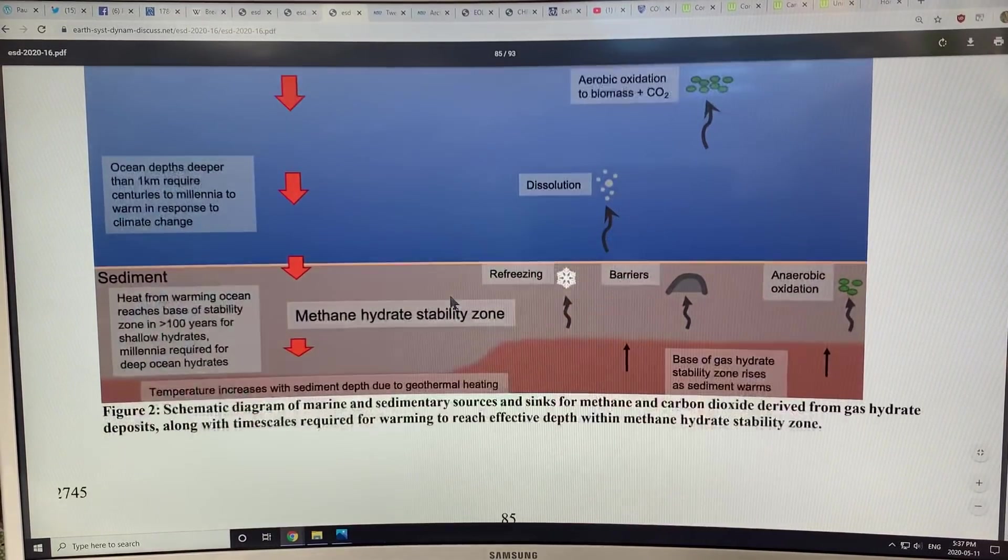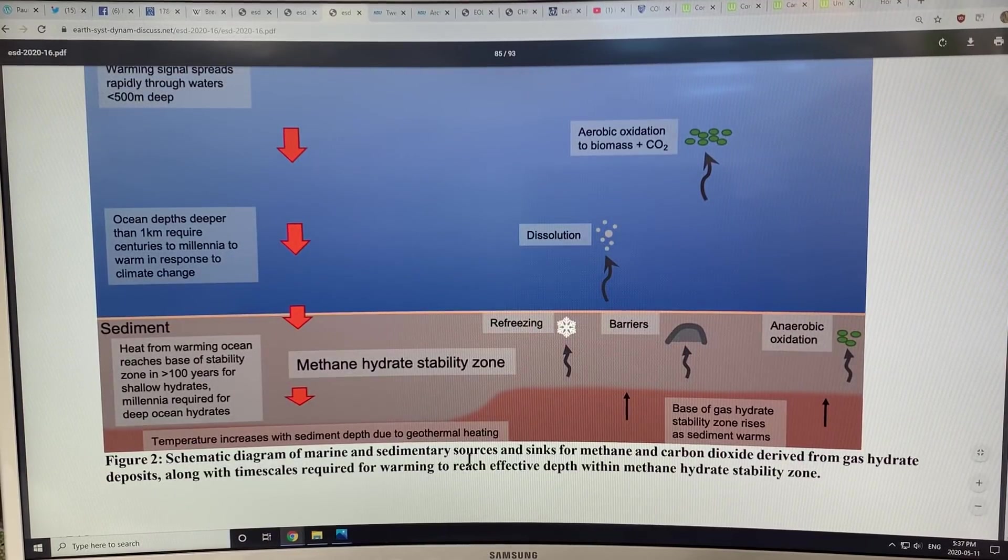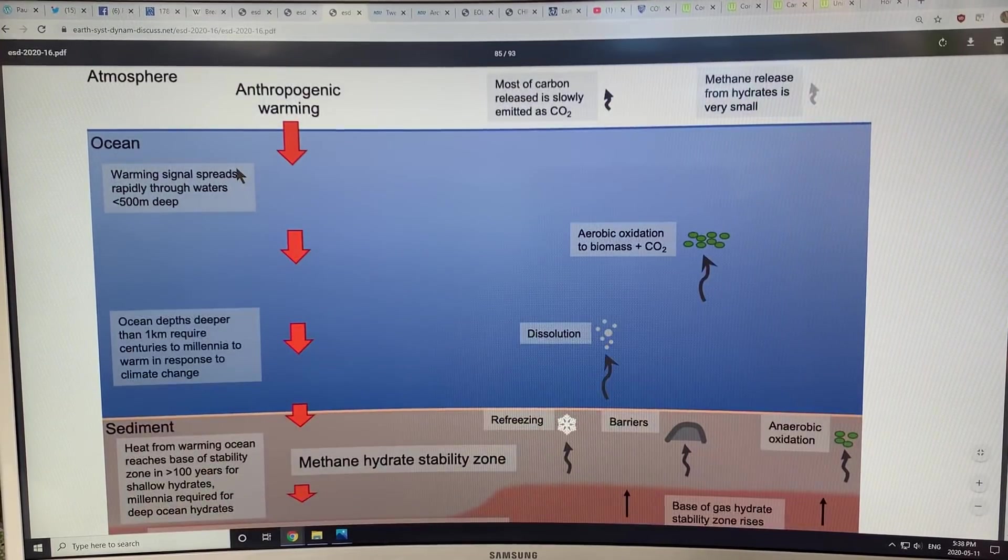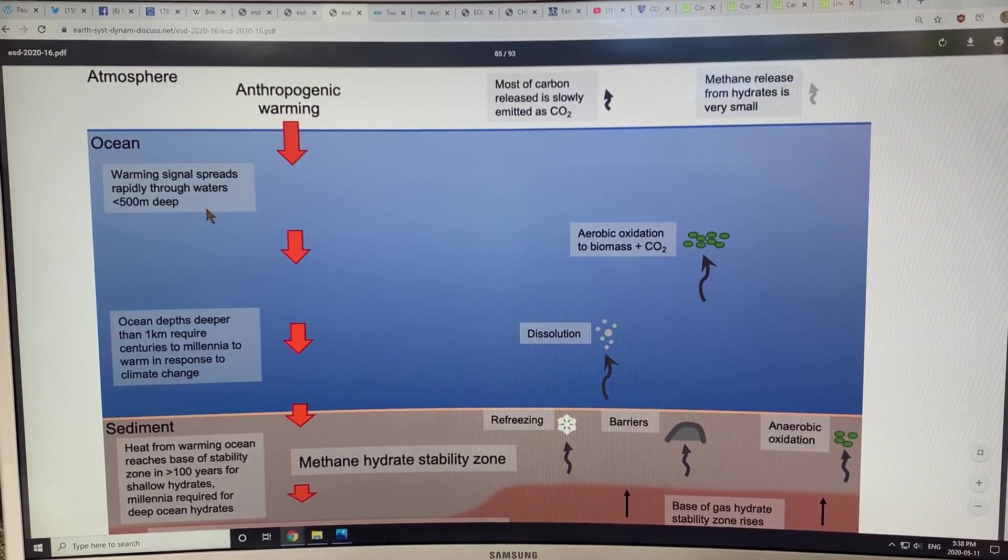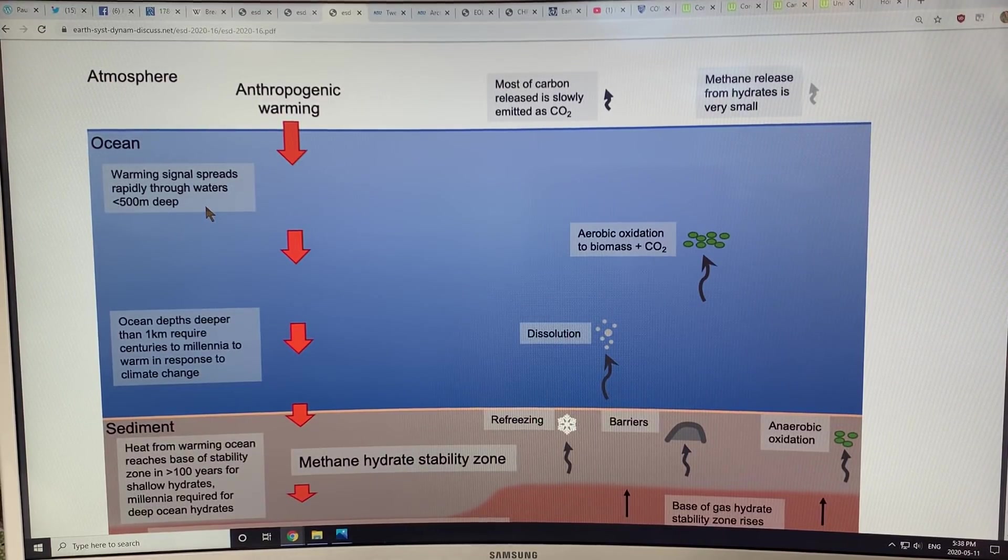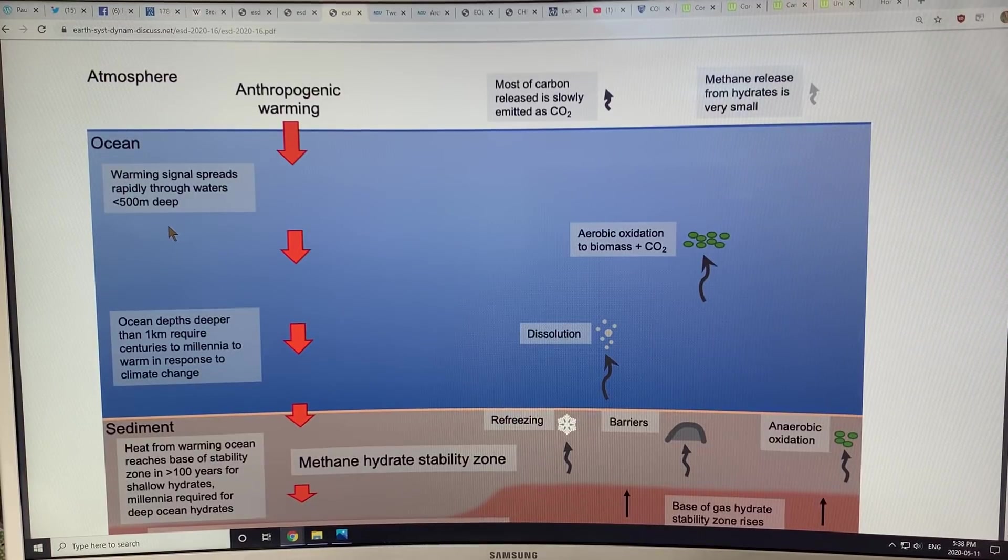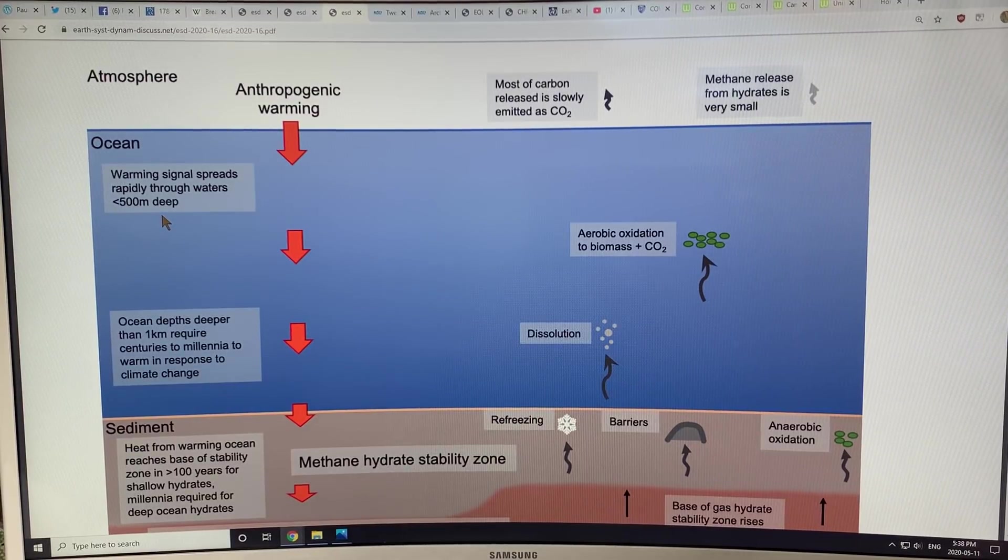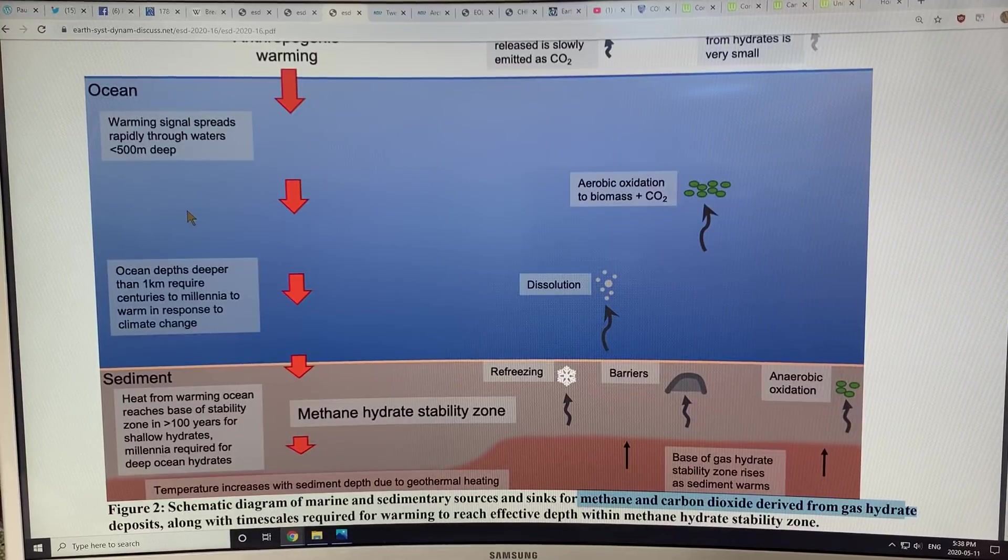This is marine and sedimentary sources and sinks for methane and CO2 derived from gas hydrate deposits. We have the oceans here and we're getting anthropogenic warming. The warming signal is spreading rapidly through waters less than 500 meters deep. When we talk about the Eastern Siberian Arctic Shelf, for example, some of the largest continental shelves are in the Arctic and the water is typically less than even 50 meters deep. The heat is going into the water and the water is heating the sediments on the seafloor, exposing the methane clathrates that are deep in the sediments to release.